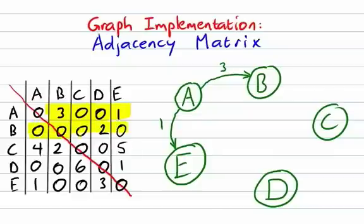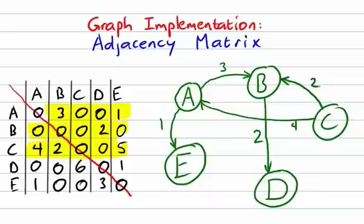There's only one edge originating at B, and that's an edge to D with weight 2. C has three edges originating and they have different weights. We have one from C to A with weight 4, one from C to B with weight 2, and one from C to E with weight 5.